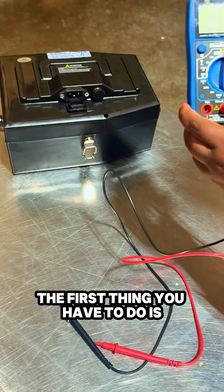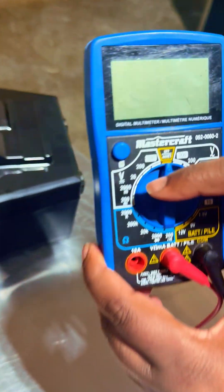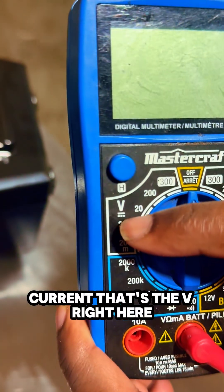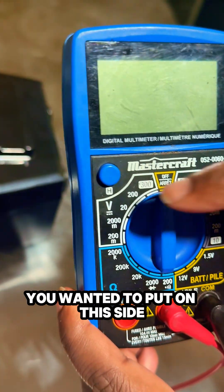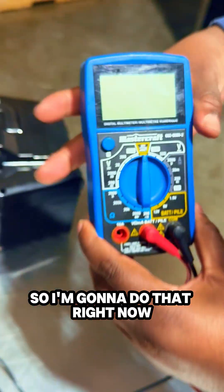The first thing you have to do is set it to direct current. That's the V right here with the broken lines at the bottom. You want to put it on this side and set it to 200. So I'm going to do that right now.